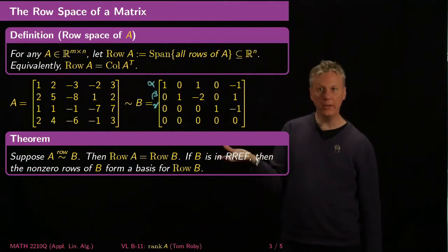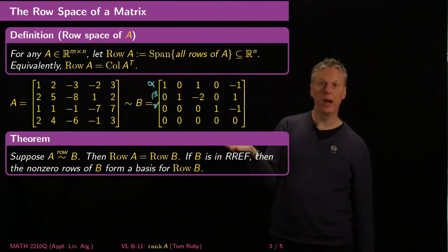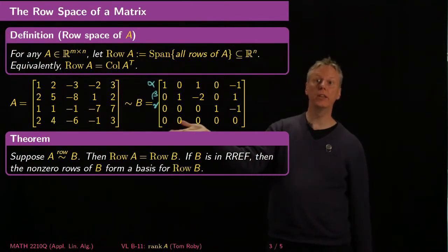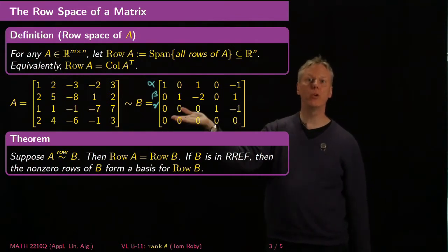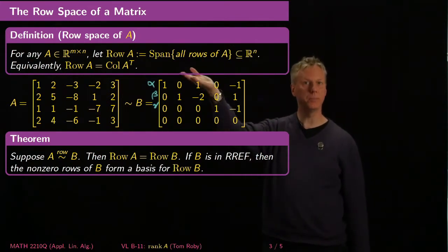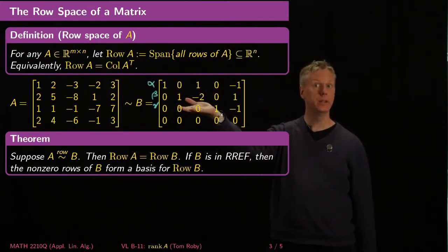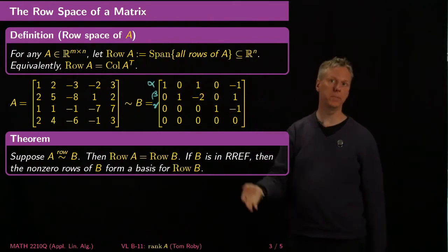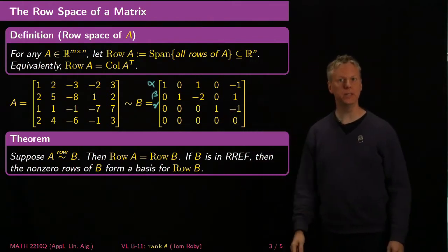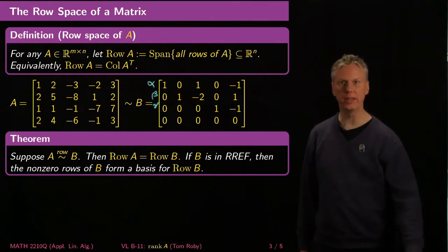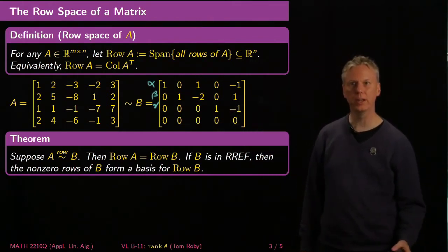On the other hand, if B is in row reduced echelon form, then the non-zero rows of B form a basis, because they're linearly independent and they span. You don't need the zero vectors to be part of your span — that's always completely redundant.